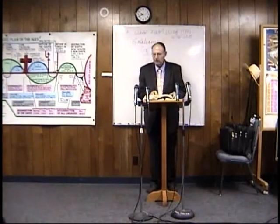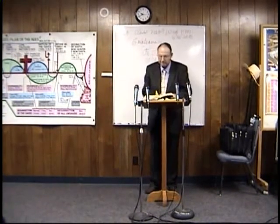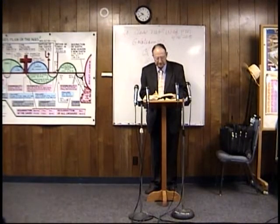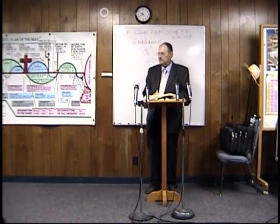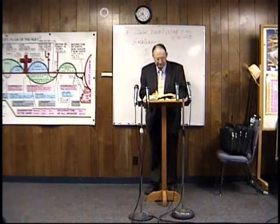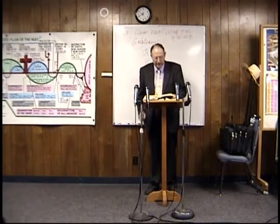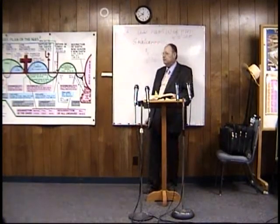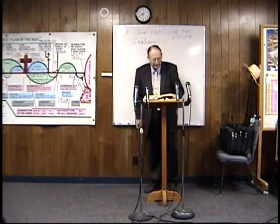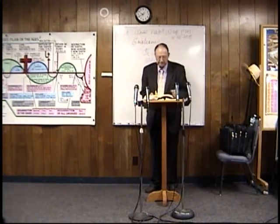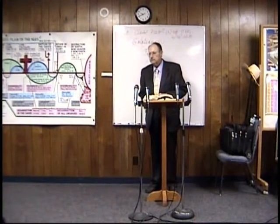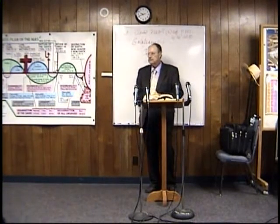Chapter 15, verse 1: 'After this, Absalom provided for himself a chariot and horses and fifty men and runners before him.' Absalom provided for himself a chariot, horses, and fifty men running before him. Absalom, we're going to find out, is going to be deceitful.